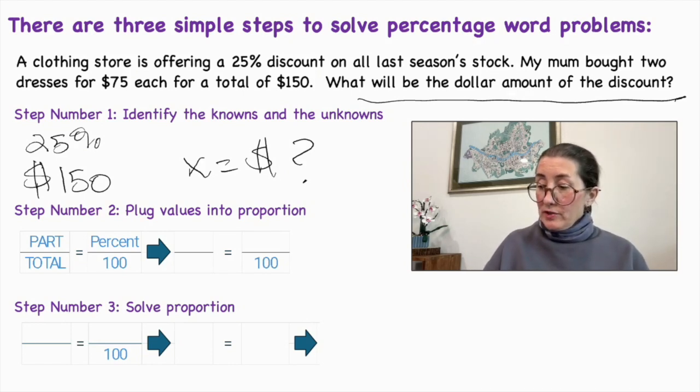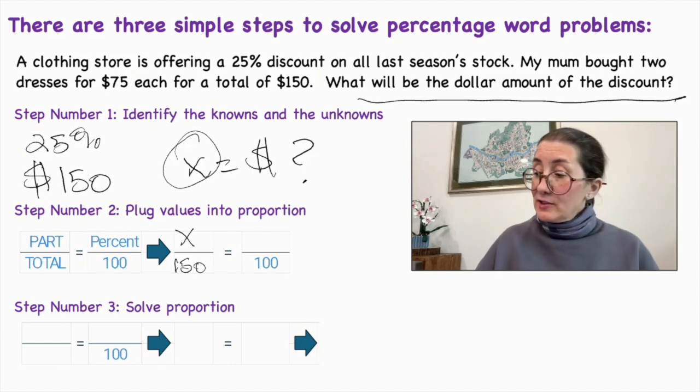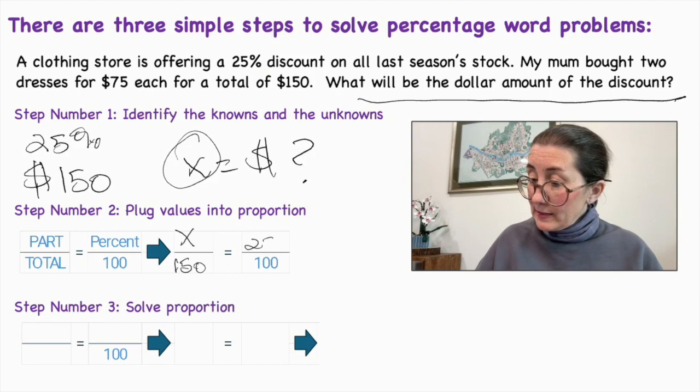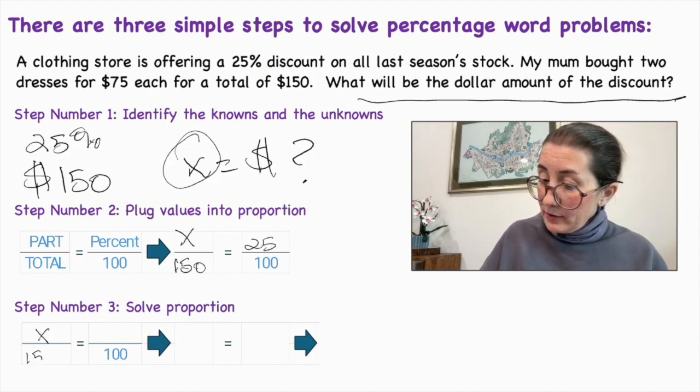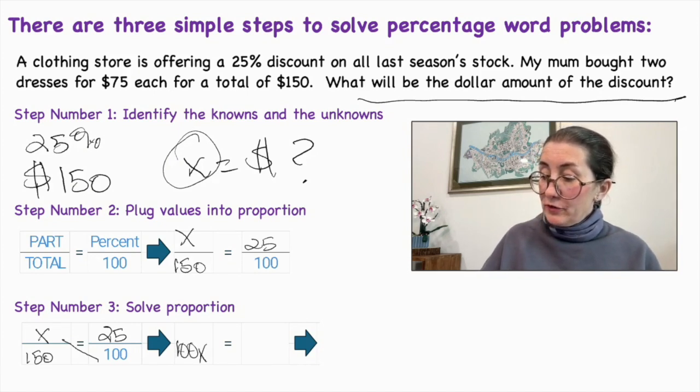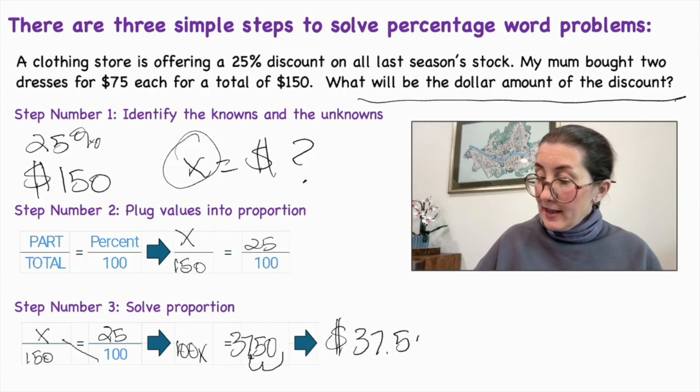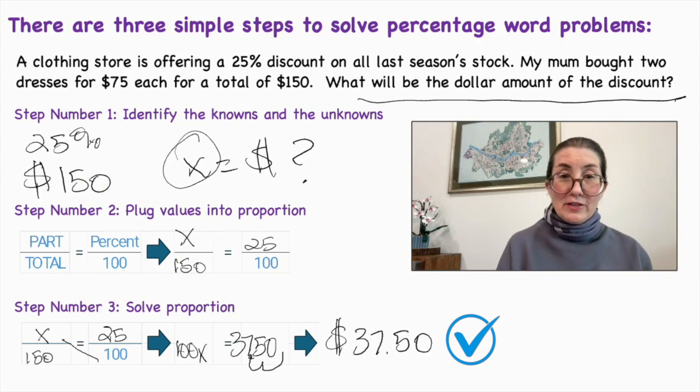So part over total is equal to percent over 100. So part is what we don't know. That's X and the total is 150. And the percentage we do know, which is 25. So X over 150 is equal to 25 over 100. So that is 100X is equal to 150 times 25, which is $3,750. We divide that by 100 and that becomes $37.50 is the dollar amount of the discount.